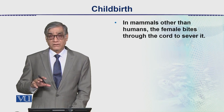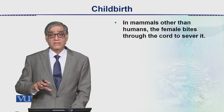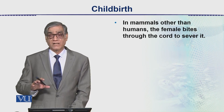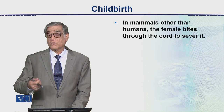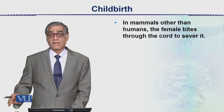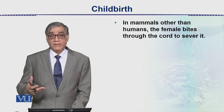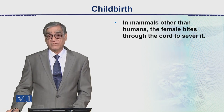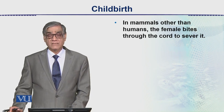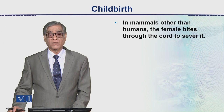Muscular contractions continue until the expulsion of the placenta. The chorionic villi, which had penetrated into the endometrium, ultimately have to come out. If any part of the placenta remains within the mother's body, it may become toxic and the mother's life would be at stake. This is all about the process of childbirth in humans as well as in mammals.